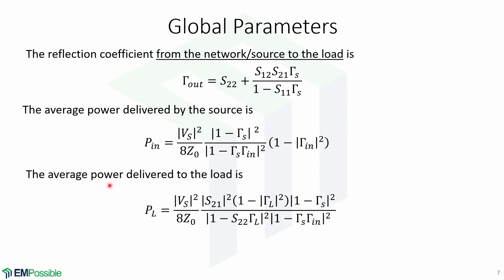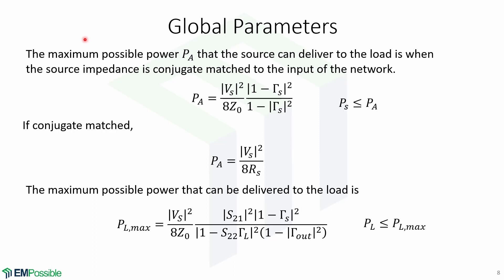The average power delivered to the load is given by this expression. When the two-port network is connected to the system, the maximum possible power Pa that the source can deliver to the load is when the source impedance is conjugate matched to the input of the network. Pa is given by this. Note that this is just the maximum possible power — it's not what the source is actually delivering.